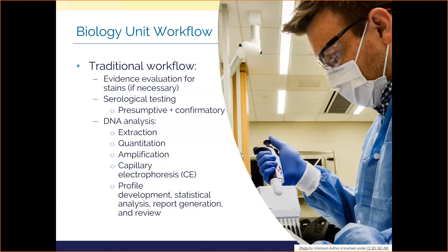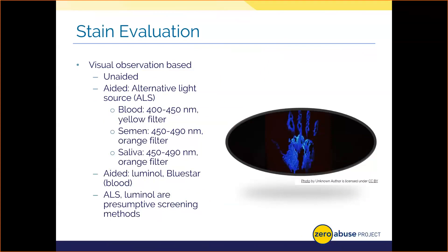Before determining what serological tests are needed, we have to observe a potential stain on an item of evidence. Sometimes we can see stains with the unaided eye, but dilute stains or those on non-contrasting backgrounds are hard to see. We use different wavelengths of light measured in nanometers by an alternative light source, or ALS, devices. We scan the entire garment — inside, outside, front and back, in and out of each sleeve and pant leg. It is quite a time-consuming process.